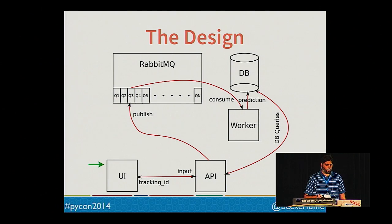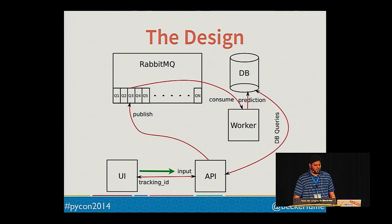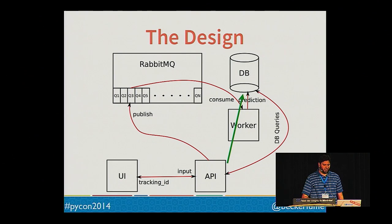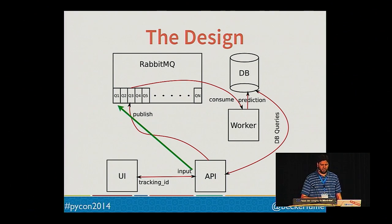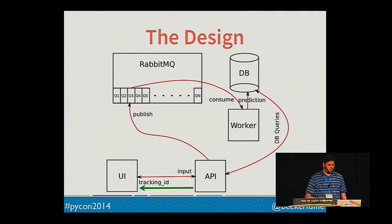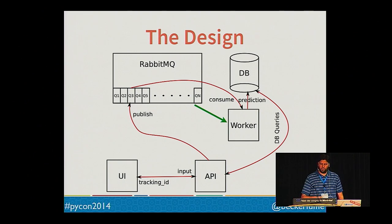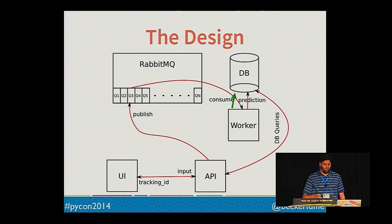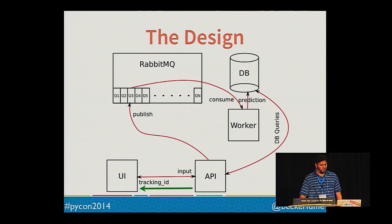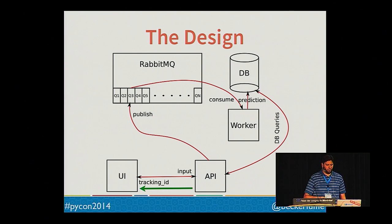Our design looks like this: the input comes from the UI where the user enters text to classify. The UI hits a Flask REST API via a GET request. The API stores the request in the database, then sends a message to RabbitMQ with the text to classify and the tracking ID. The API returns a JSON response to the UI with the tracking ID. The consumer pulls the message off the queue in RabbitMQ, calls predict on the classifier, and the consumer stores that prediction in the database. Finally, the UI displays the result.